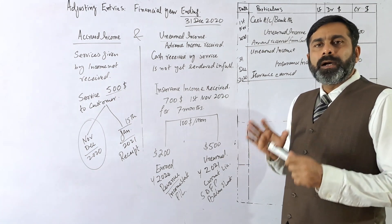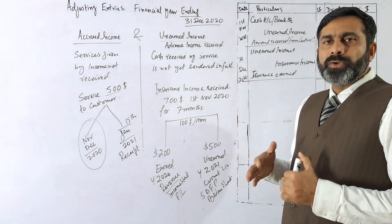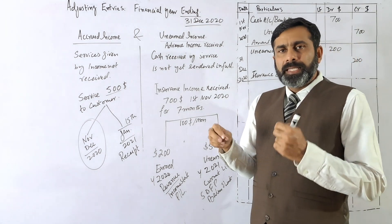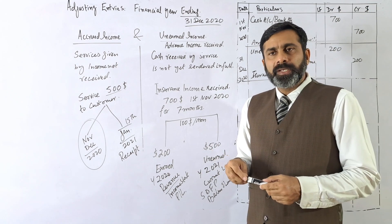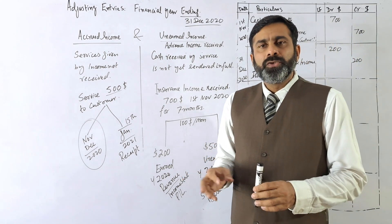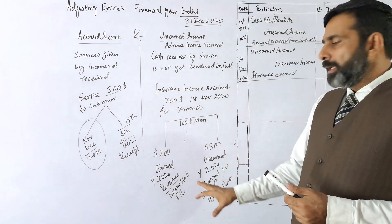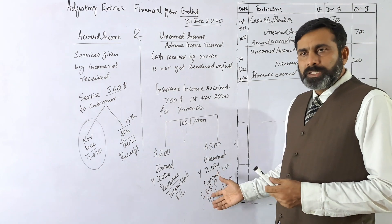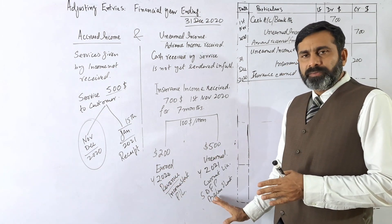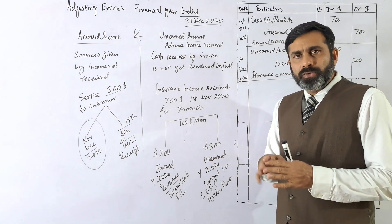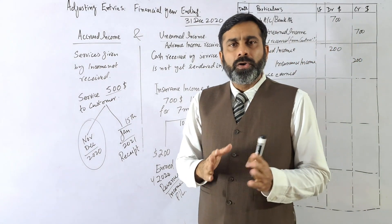That current liability will be written in the statement of financial position, also known as the balance sheet. To summarize: advance income received from the customer, where some service is given in the current financial period and some in the next — the portion given in the current period is written as income, and the portion not yet earned is written as unearned income, a current liability. So the $700 is segregated: $200 in the income statement and $500 in the statement of financial position.